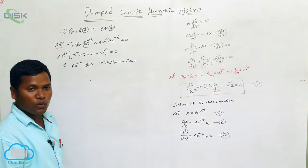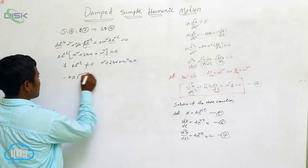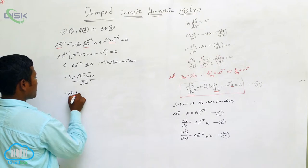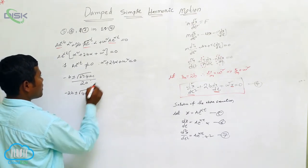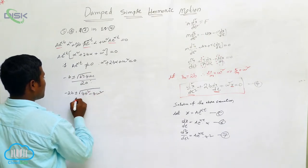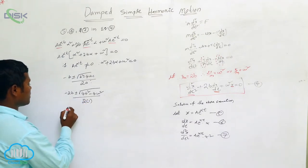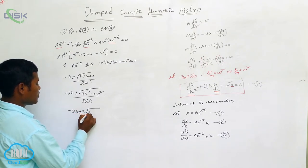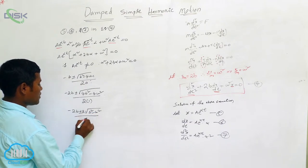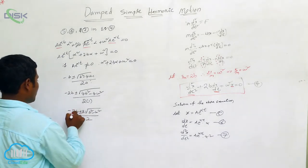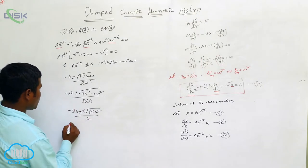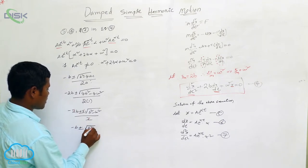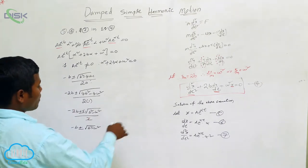There will definitely be two roots. Using the quadratic formula, α = (−b ± √(b² − 4ac)) / 2a. Here we get: (−2b ± √(4b² − 4ω²)) / 2. Taking 2 common inside the root and cancelling, we get α = −b ± √(b² − ω²). This is the solution of our characteristic equation.